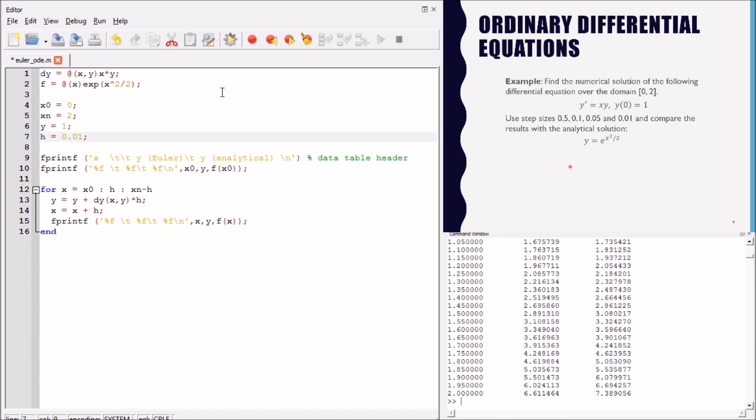Finally, we use 0.01. We notice that the solution is much, much better. And finally, we see here that we obtained much closer results. If we get smaller value of h, we will get better solution.